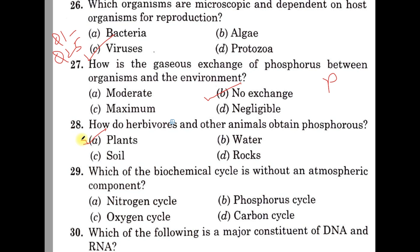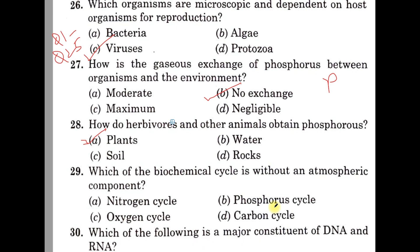Question number 29. Which of the following biogeochemical cycles is without an atmospheric component? A: Nitrogen cycle, B: Phosphorus cycle, C: Oxygen cycle, D: Carbon cycle. It is asked in which cycle there is no involvement of the atmosphere — the element is not present in the atmosphere. So the correct option is B, Phosphorus cycle.